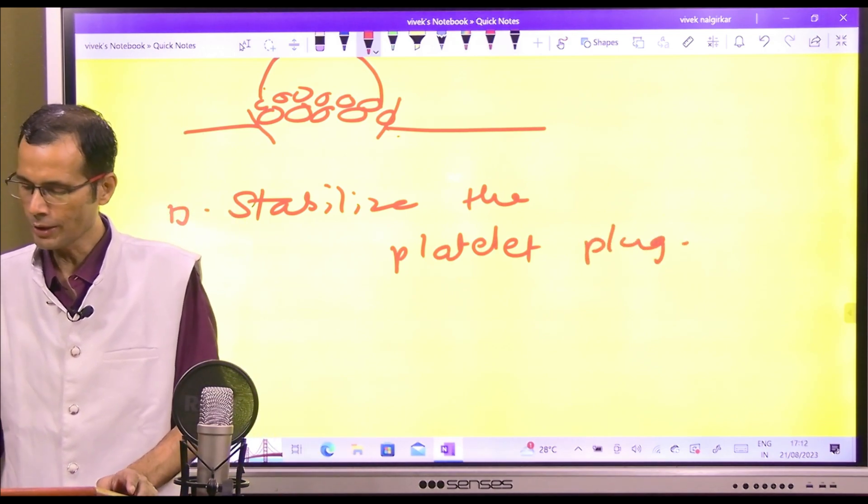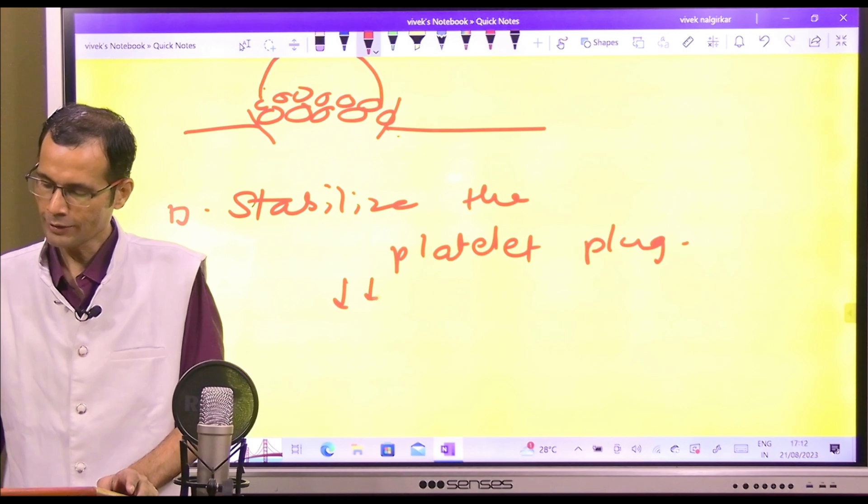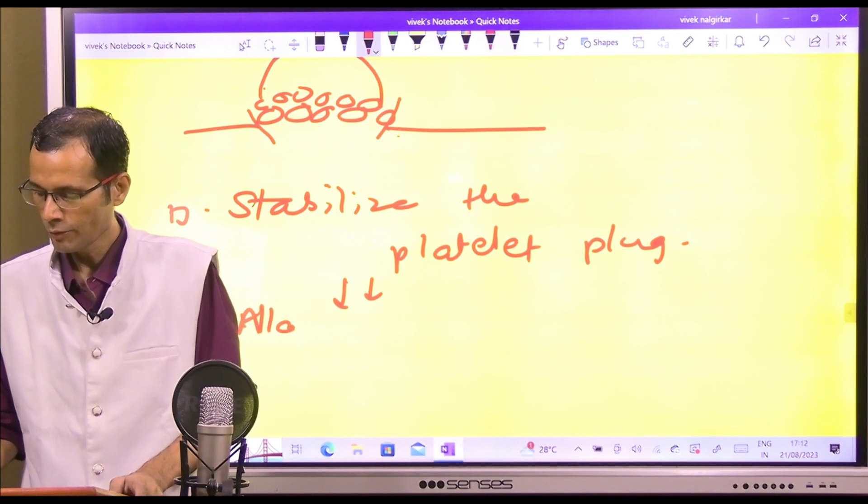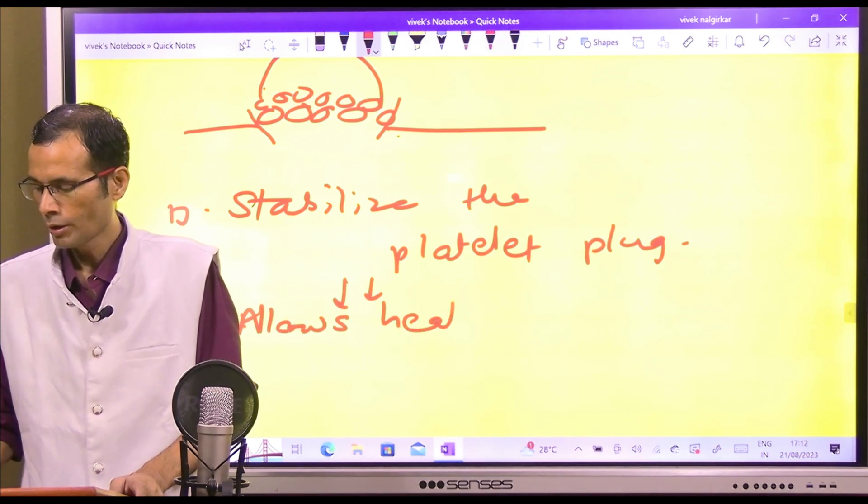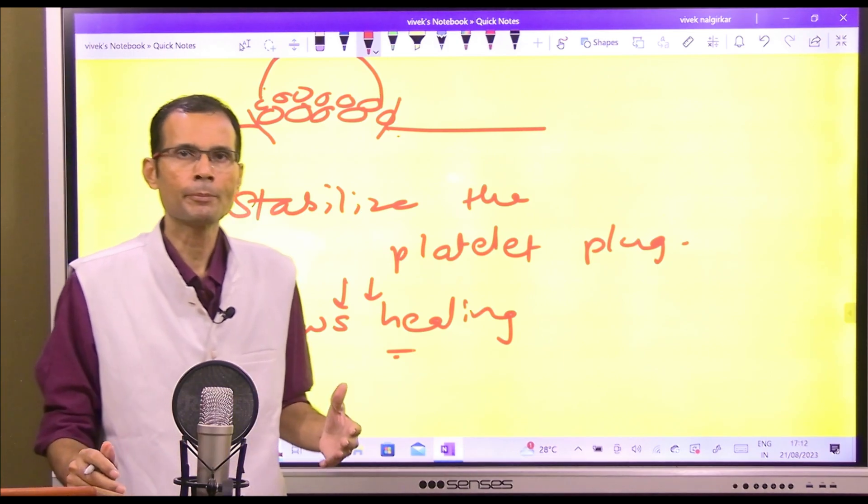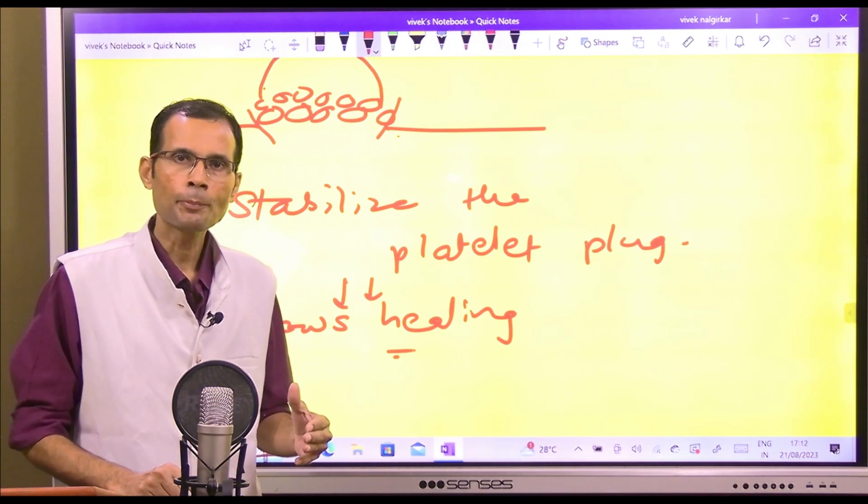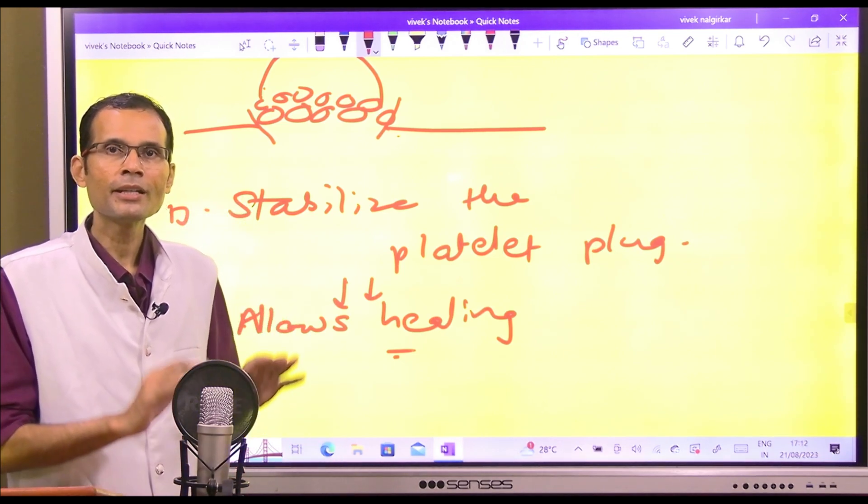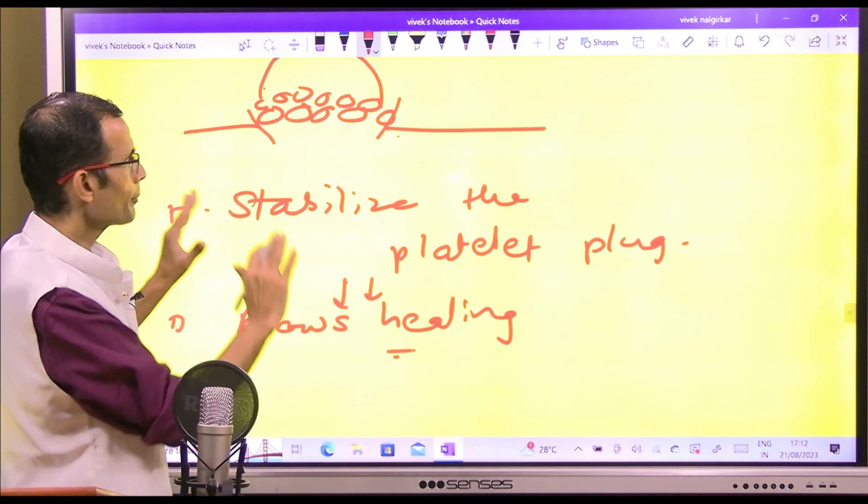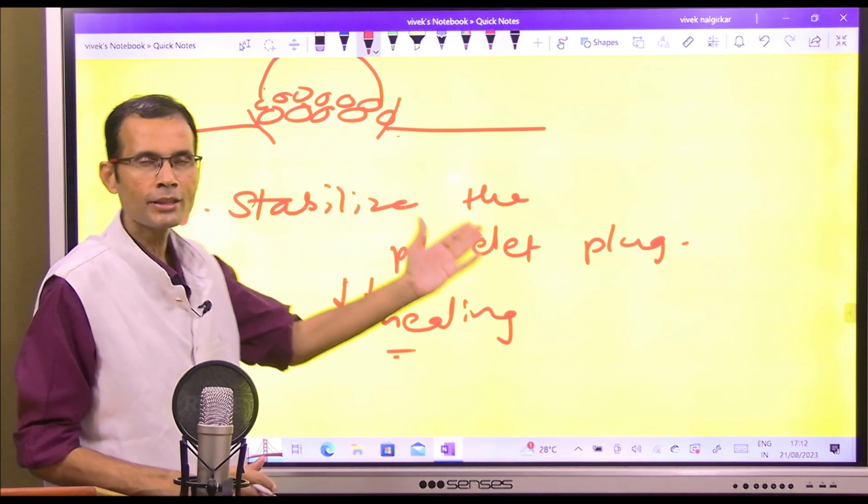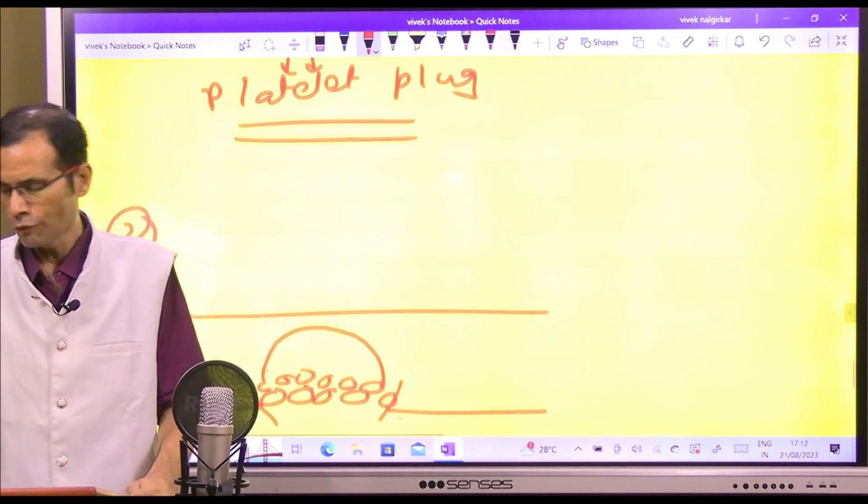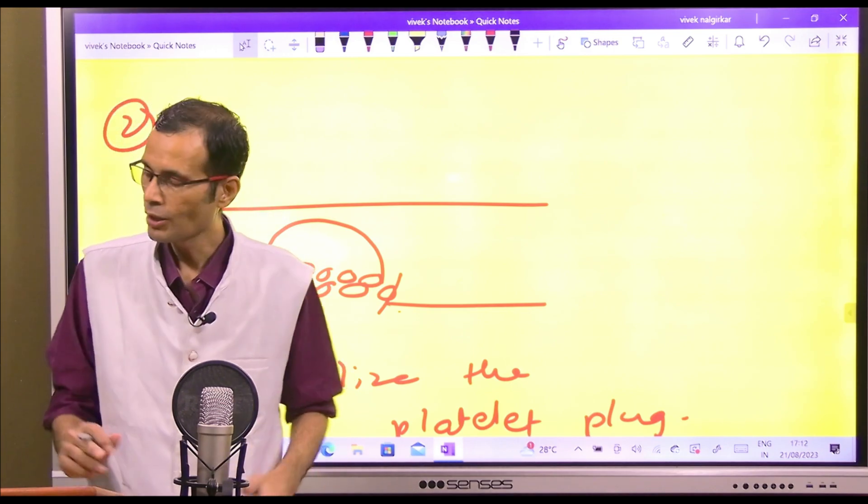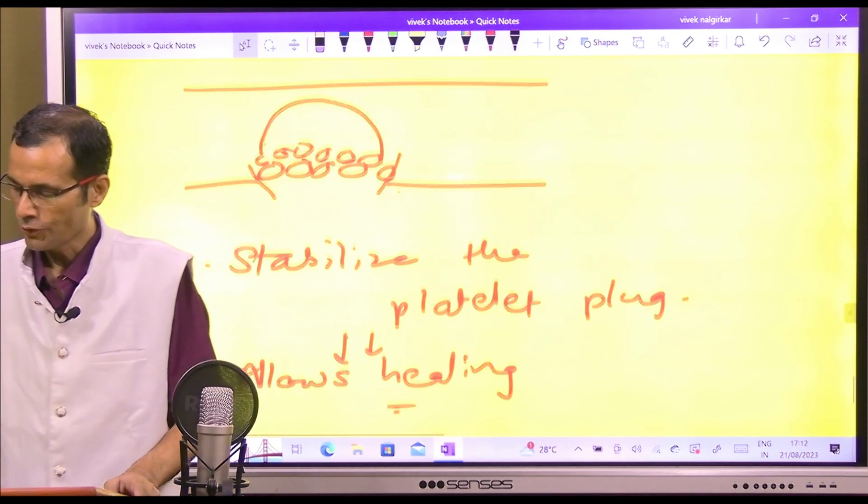So stabilize the platelet plug - and therefore that brings us to the second point. It allows time for healing of the blood vessel, which is going to take some time. Until that time, this platelet plug and the clot at the top of it would see to it that the bleeding is stopped, platelet plug does not get dislodged, and then slowly the vessel will get healed.